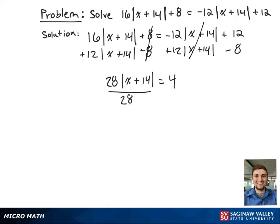To get the absolute value term by itself, we're going to divide both sides by 28. This results in the absolute value of x plus 14 equals 1 seventh.